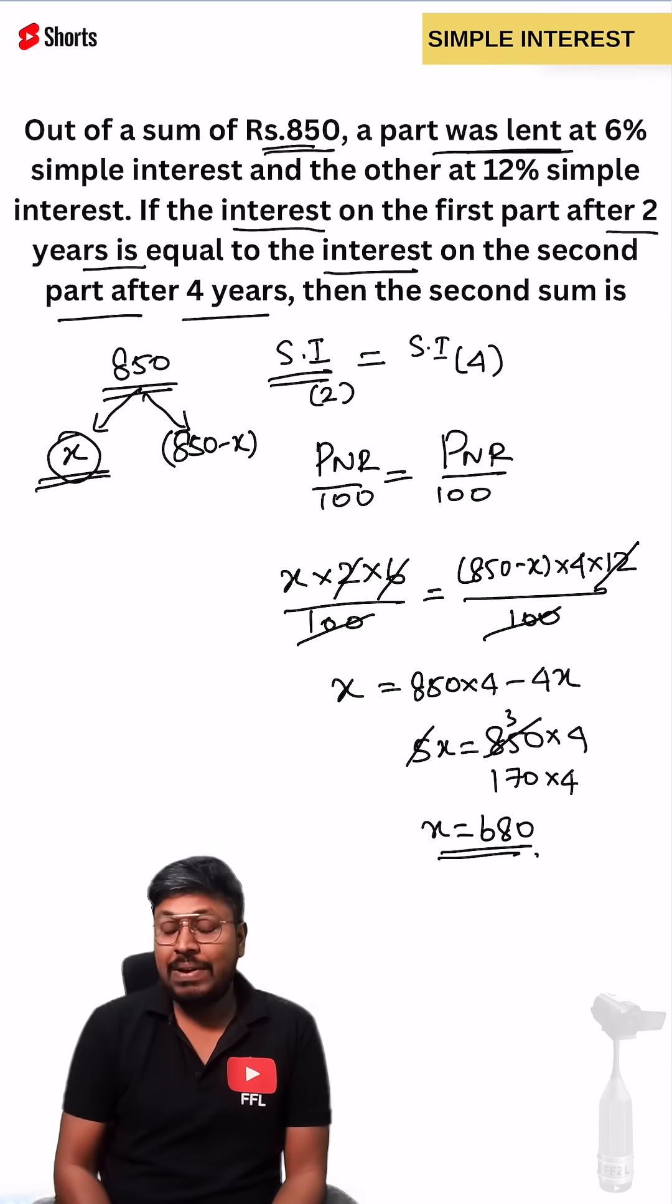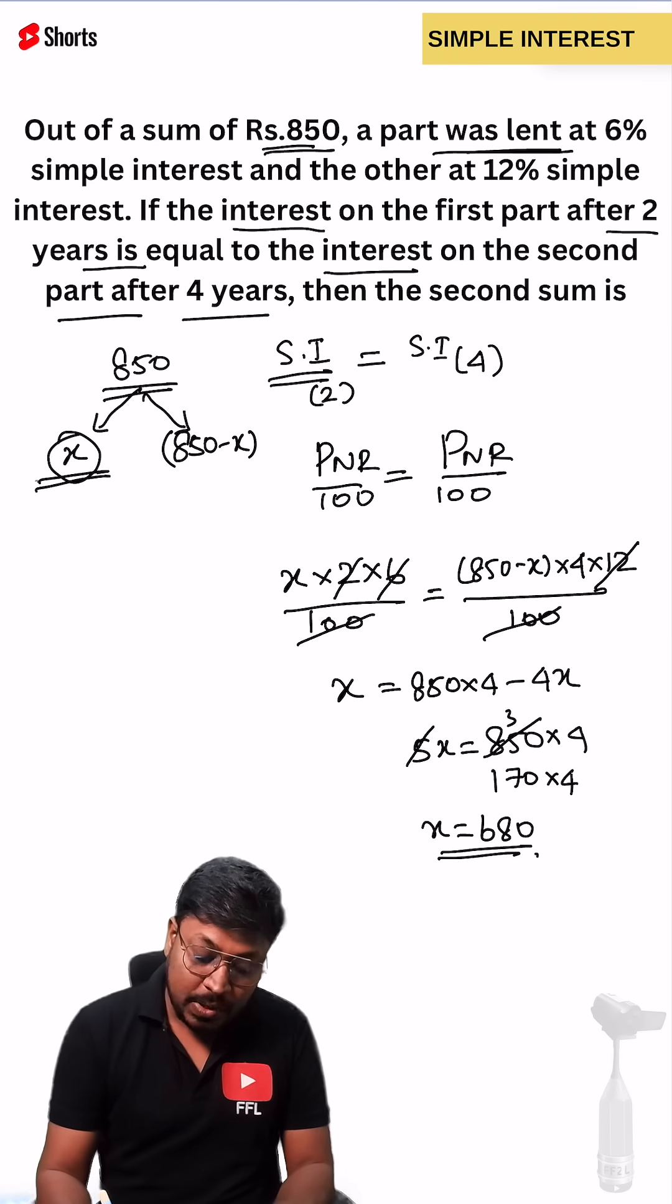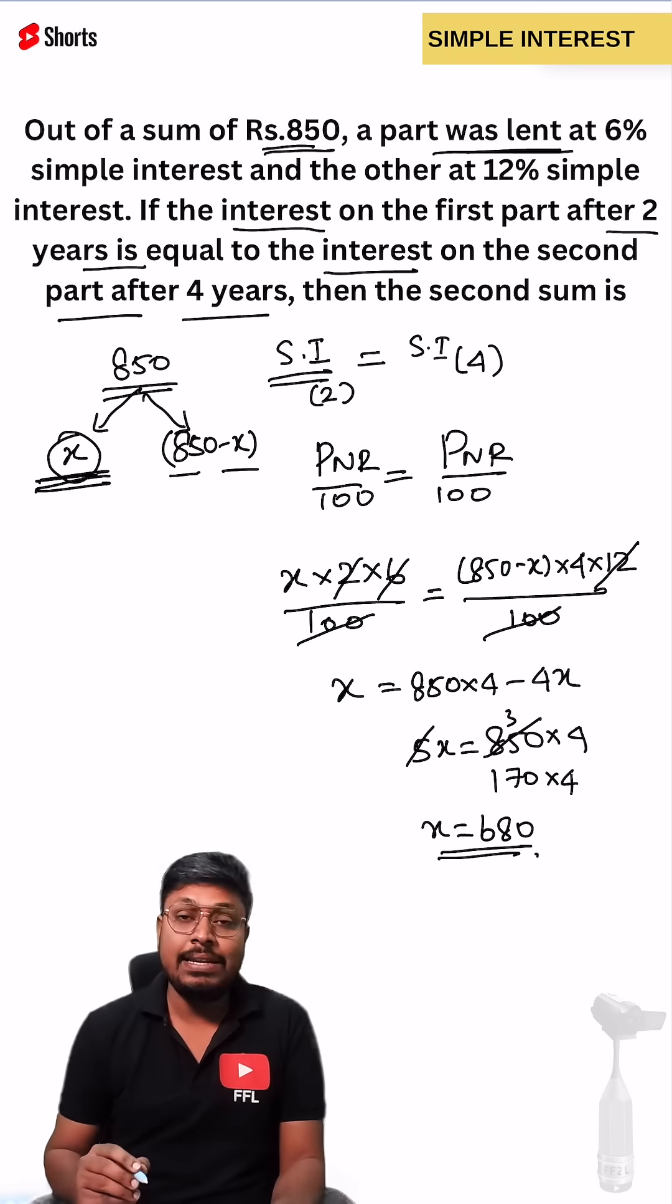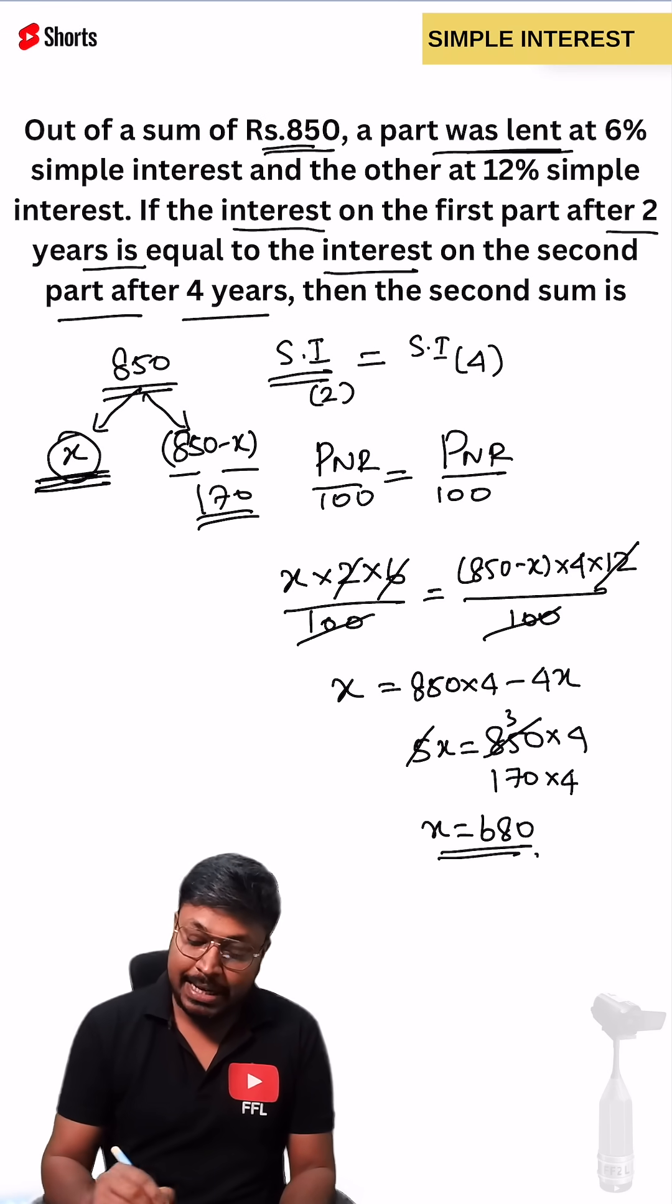We can say that the value of x equals 680 and according to the question our target is to find what is the second part. x is called the first part. The second part will be 850 minus 680 which is 170. So 170 will be the second part, 680 will be the first part.